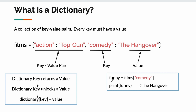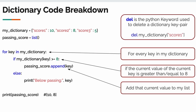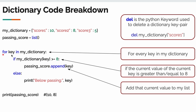Over here I have a very basic example. I have a variable called funny, and the value of my variable is my dictionary key. What does a dictionary key return? The value. So if I print funny, it's going to print The Hangover, because The Hangover is the value to my key comedy. Dictionary key unlocks my value. Here's another example. If I break this down and give you a code example, I have a dictionary — I'm going to keep it nice and easy — it's literally called my dictionary. Then I have a list called passing scores.